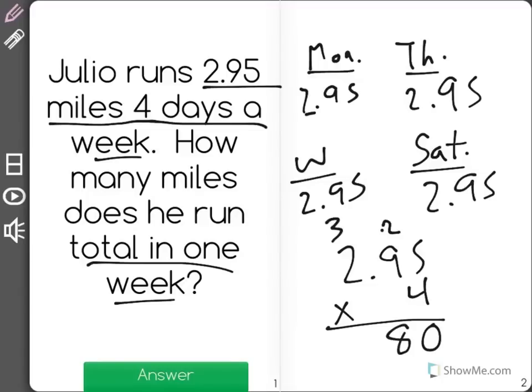Two times four is eight, plus three more is eleven. Now what's important is we have one digit, two digits after the decimal place. So we need one digit, two digits after the decimal place in our answer.